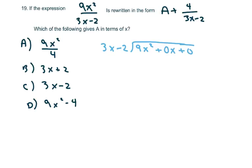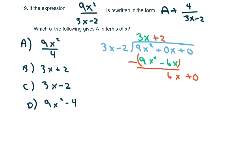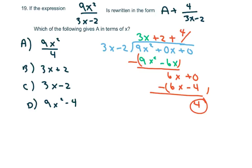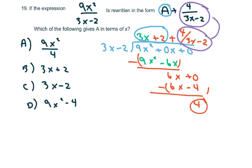When you do that, you get 3x. So this gives you 9x² - 6x. Subtract, and you get 6x + 0. Bring down the next term, giving you plus 2. Multiply to get 6x - 4, subtract, and that's going to be plus 4. So your remainder is 4, expressed as +4 over the divisor (3x - 2). Comparing with the given form, a equals 3x + 2, which is answer b.